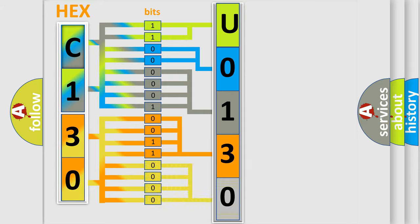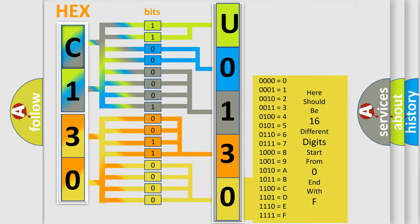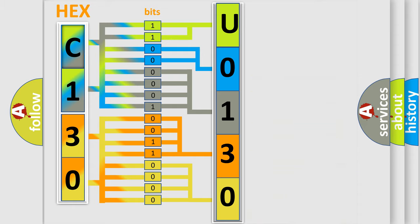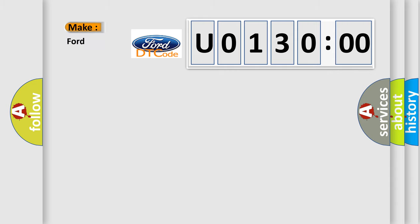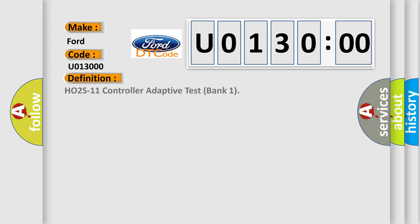A single byte conceals 256 possible combinations. We now know in what way the diagnostic tool translates the received information into a more comprehensible format. The number itself does not make sense if we cannot assign information about what it actually expresses. So, what does diagnostic trouble code U013000 interpret specifically for Infiniti car manufacturers? The basic definition is: HO2S111 controller adaptive test bank 1.